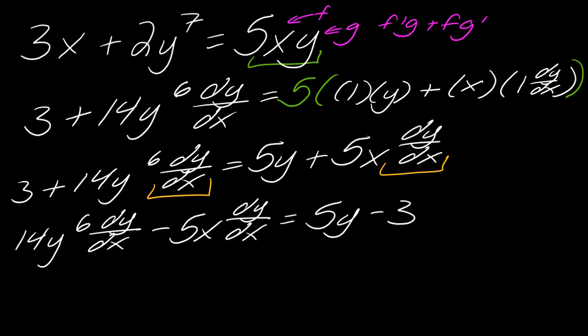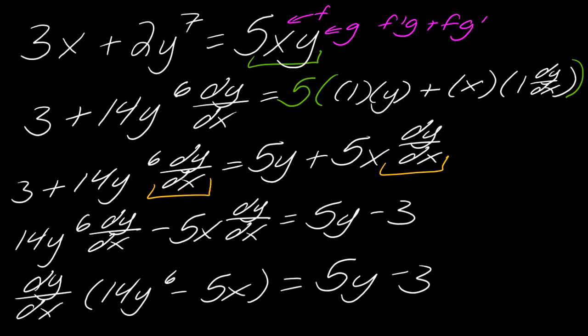So now from here, usually the trick that you're going to use with this is you're going to factor out this dy dx. So if I factor out my dy dx, I get 14y to the 6 minus 5x, and then I've still got all this stuff over here. And so now I'm really in the home stretch, so let me clear some space.